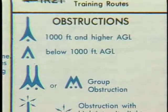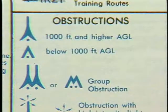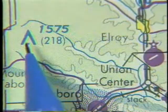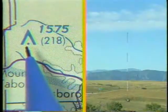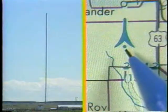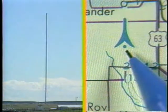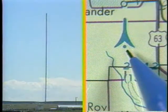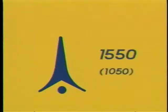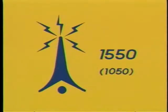Additional information on the chart concerns obstructions. One symbol is for obstacles less than 1,000 feet AGL, and another symbol is for obstacles 1,000 feet AGL and above. Printed next to the symbol is the height of the structure above sea level, and in parentheses is its height above the ground. If the structure has high-intensity lighting, the lighting symbol is included.